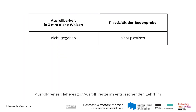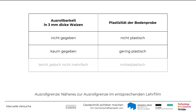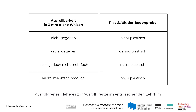Nicht-plastisch ist ein Boden, der sich nicht zu 3 Millimeter dicken Walzen ausrollen lässt. Als gering-plastisch wird ein Boden angesprochen, der kaum ausgerollt werden kann. Wenn der Boden leicht bis zum Erreichen der Ausrollgrenze gerollt, dann aber nicht mehr erneut ausgerollt werden kann, spricht man von mittelplastischen Böden. Hochplastisch ist ein Boden, den man sehr lange rollt, bevor die Ausrollgrenze erreicht wird und der nach Erreichen der Ausrollgrenze mehrmals erneut ausgerollt werden kann.